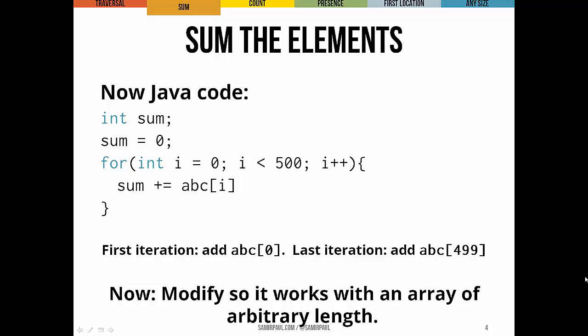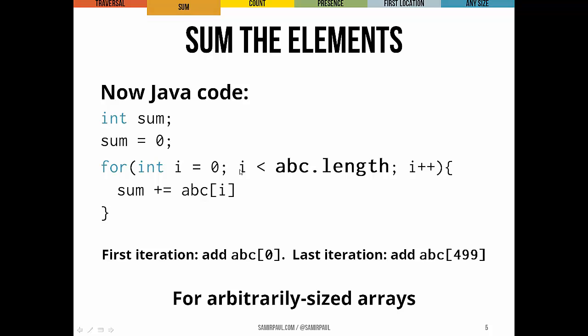Now, if I wanted to modify this so that it works with an array, not just of length 500, which ABC happens to be, but an array of arbitrary length, right? Or if we don't know exactly how long ABC is going to be before we run the program, well, then in that case, we would just make one slight modification.